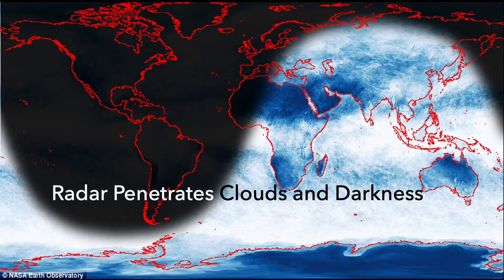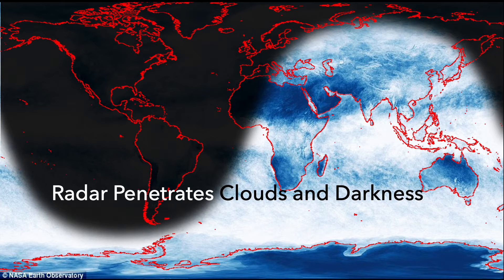We use radar, or microwave, because it penetrates clouds. Also, we can use it day and night because radar sensors don't need sunlight. Think about GPS, which also uses microwave. When you navigate with GPS, you don't worry about its performance on a cloudy day or when you're driving late at night.